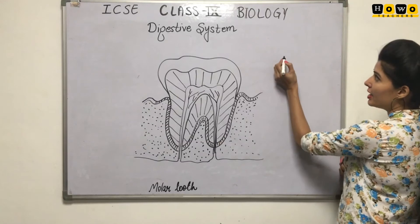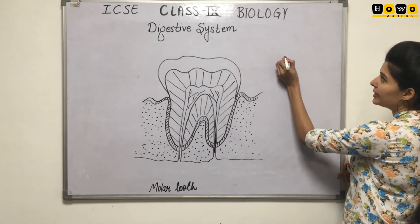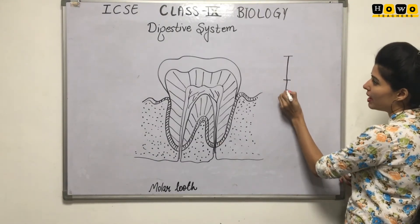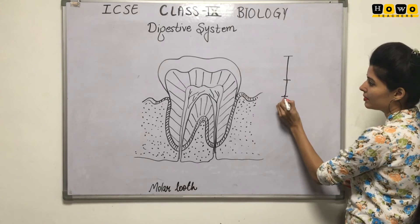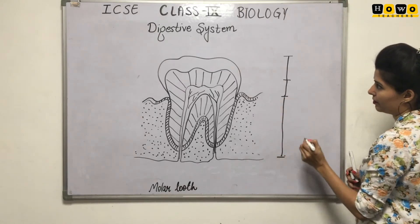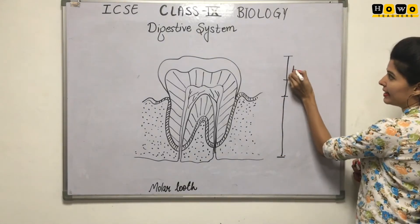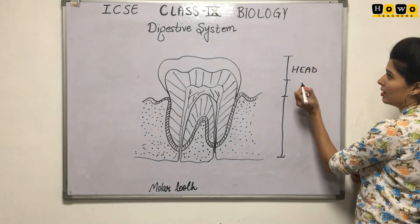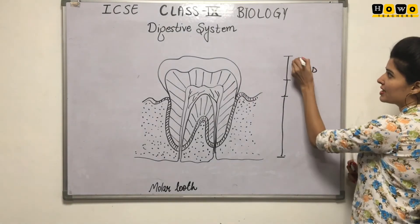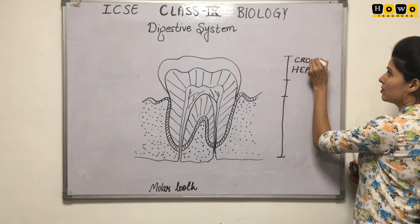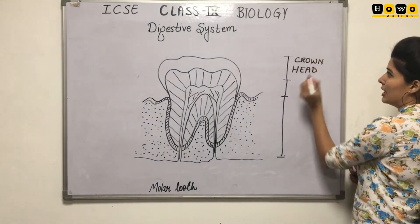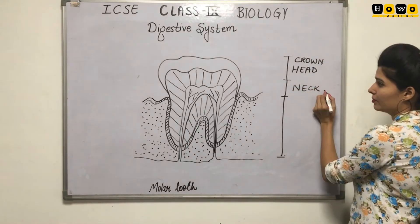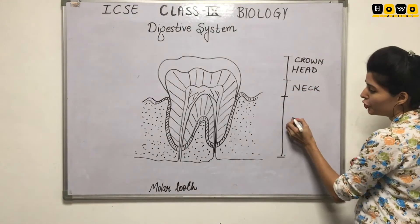Now see, the complete tooth can be divided into three parts: the head or crown, the neck, and the root.